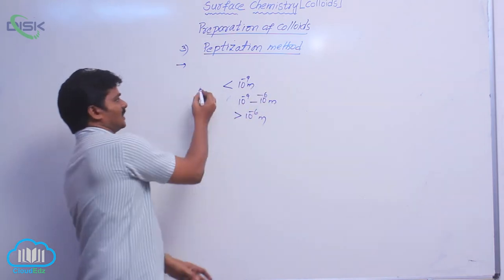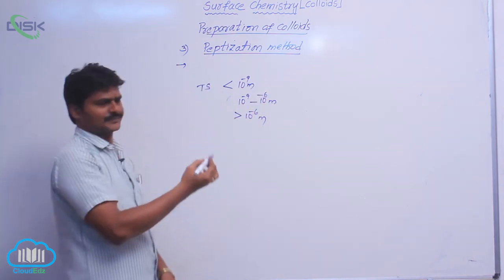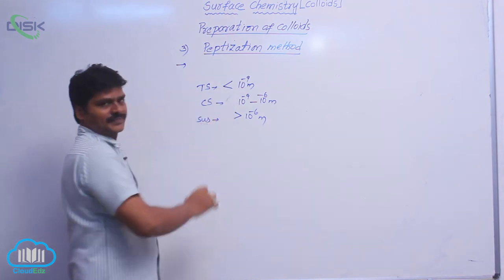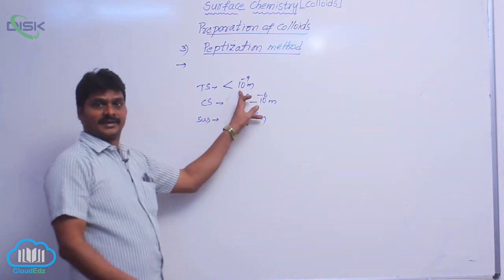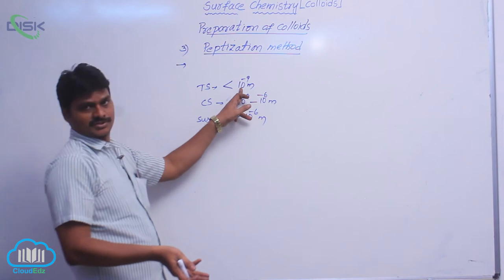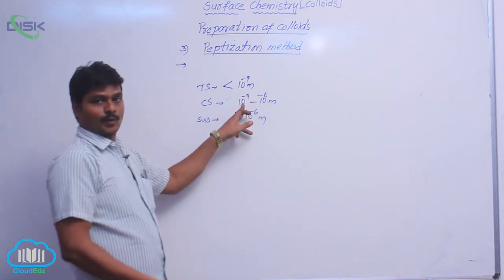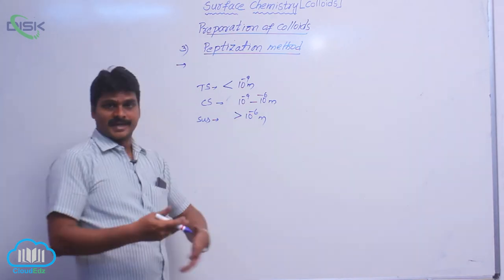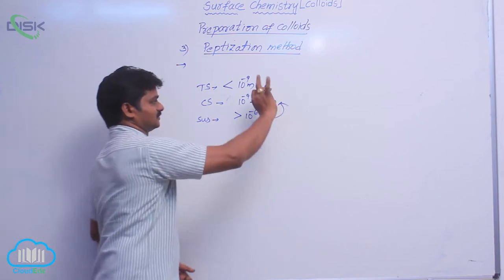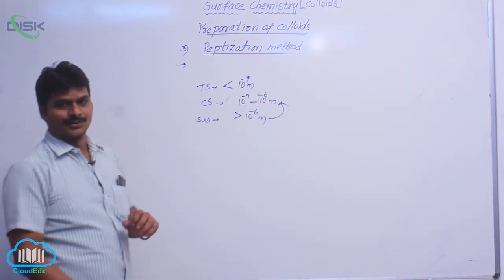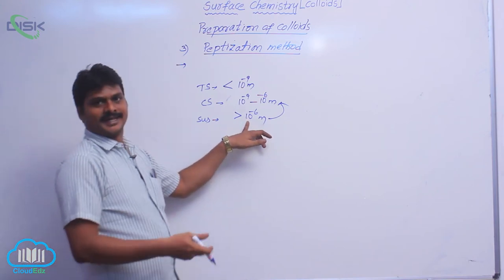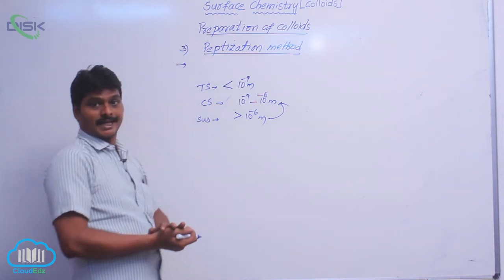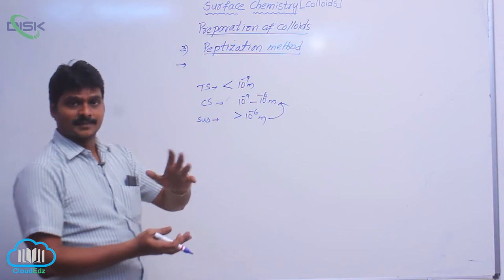So these are the three binary mixtures. Particles of the dispersed phase have this range in size. In colloidal solution, particles have this range; in suspension, this range. Now, we are preparing colloidal solutions from suspension — so what we do is decrease the size of the particles. Converting from suspension to colloidal solution involves breaking of larger particles into smaller ones.